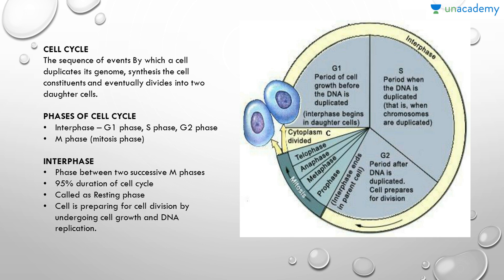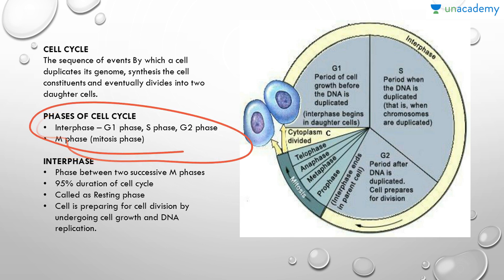Cells divide approximately once in a 24-hour cycle, though this duration may vary from organism to organism. For example, yeast can progress through the cell cycle in only about 90 minutes. The cell cycle is divided into two main phases: the interphase and the M phase. Interphase is further subdivided into G1 phase (Gap 1), S phase (Synthesis phase), and G2 phase (Gap 2).